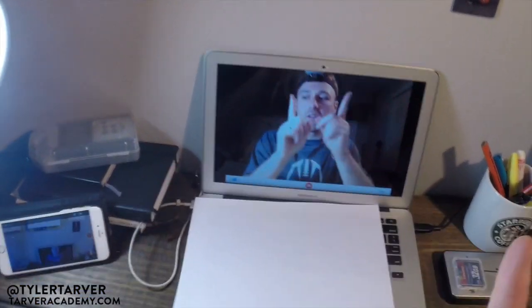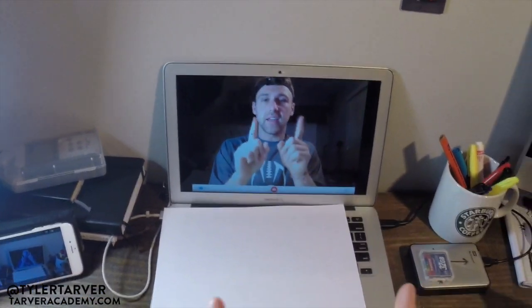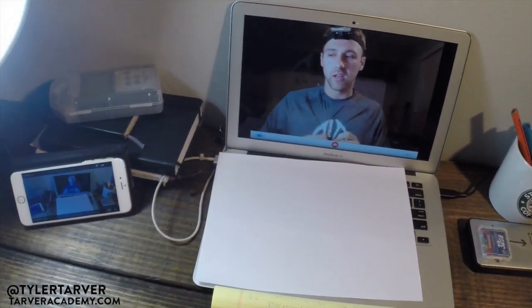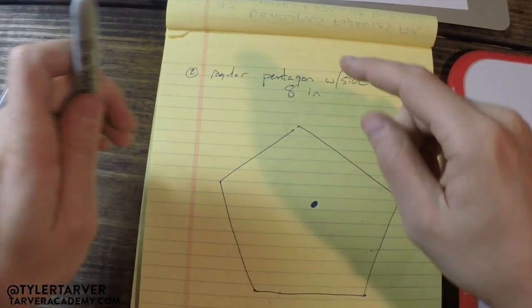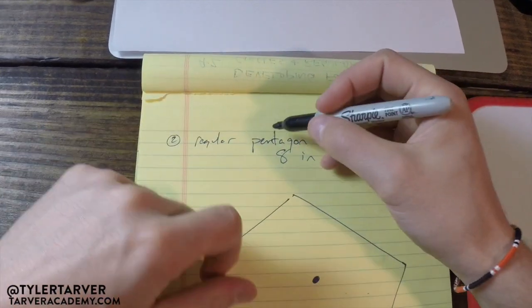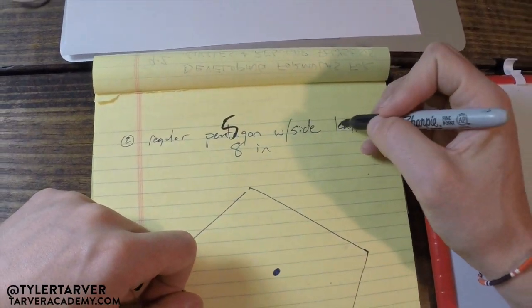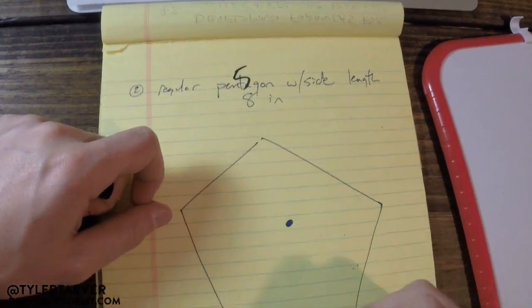Okay, so we are learning about finding the area of a regular pentagon. We've got ourselves a regular pentagon which means it has five sides with a side length of 8 inches.